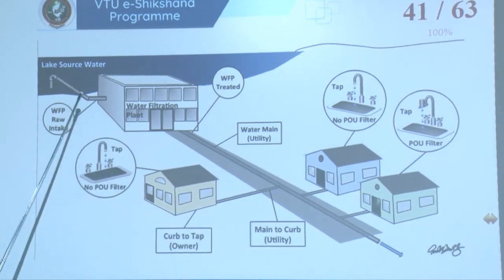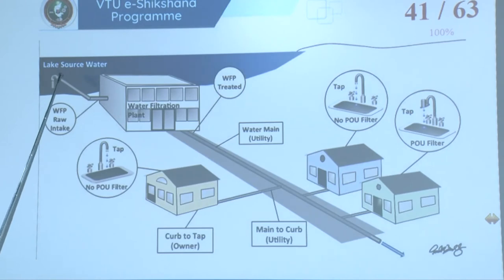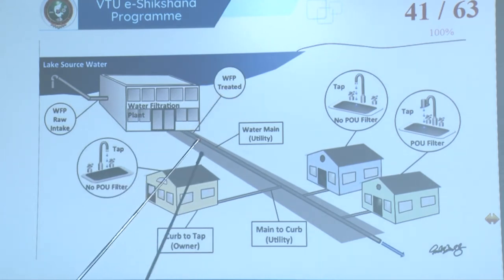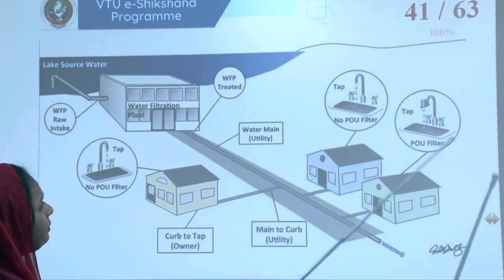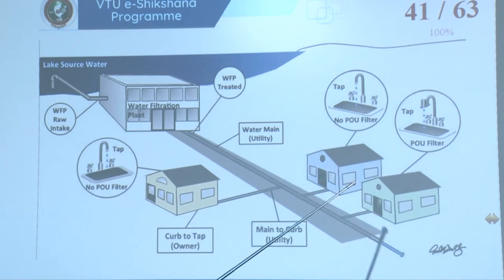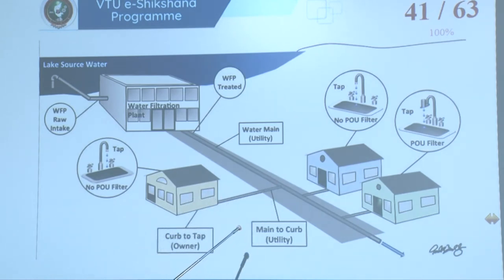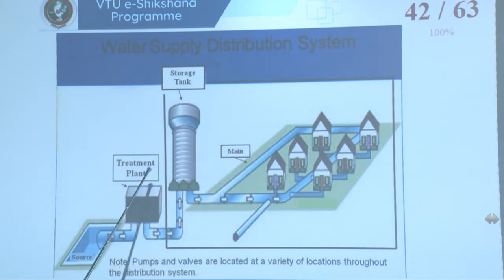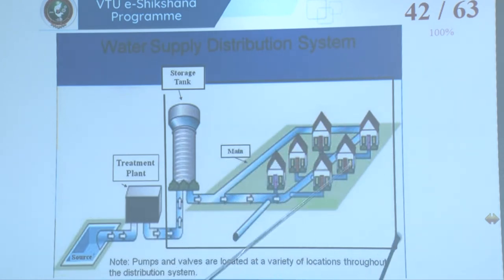Reviewing the full water supply chain: a source enters a filtration plant, the raw intake is treated, and water enters the water main or utility. Depending on how the mains are connected — to the curb, utility, or owner directly — water distribution is provided. The water distribution system has a source, a treatment plant, a storage tank, and a main pipeline distributing the network, with pumps and valves located at various points throughout.